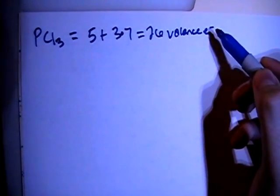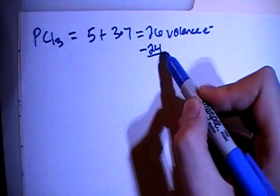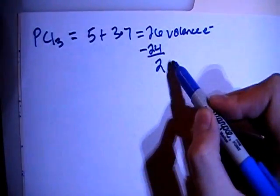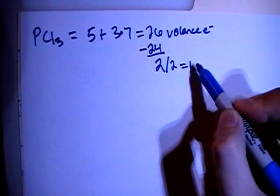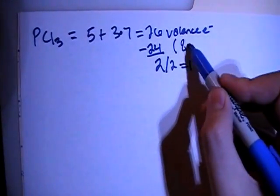So we can subtract the largest multiple of 8, which is 24, gives us 2 remaining, divide that by 2, gives us 1 pair of non-bonding electrons, and this 24 is 8 times 3.